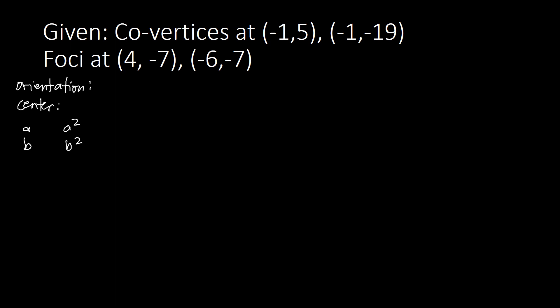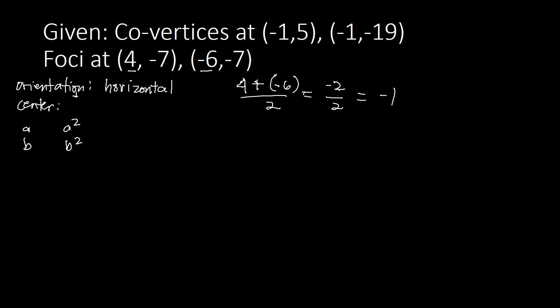For orientation, we base it on the foci since we don't have vertices. The X values of the foci are 4 and −6 — they are not the same — so this is horizontal. The Y values are both the same, confirming it's horizontal. For the center using the foci, the different X values are 4 and −6. Adding and dividing by 2: (4 + (−6))/2 = −2/2 = −1 on X, and −7 on Y. Center is at (−1, −7).